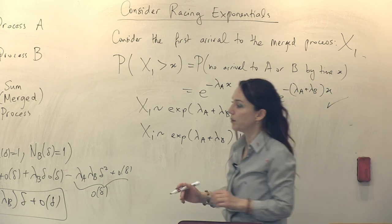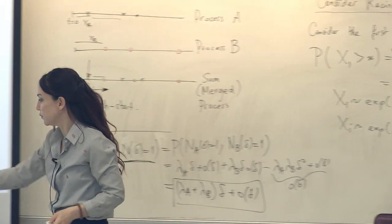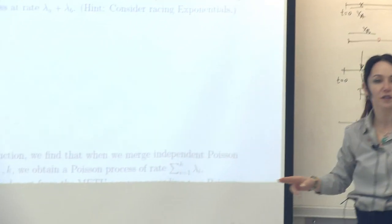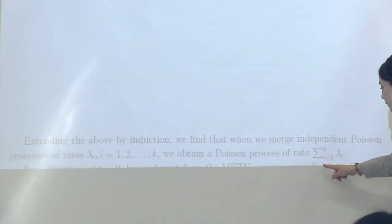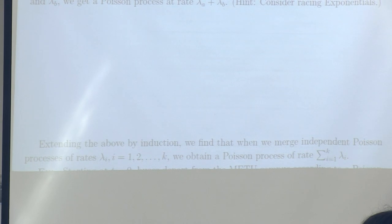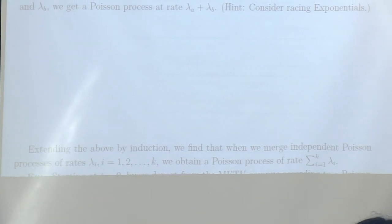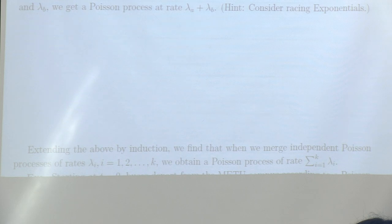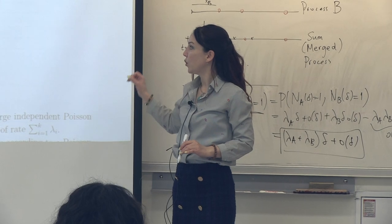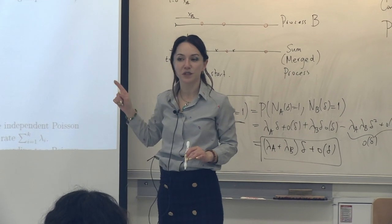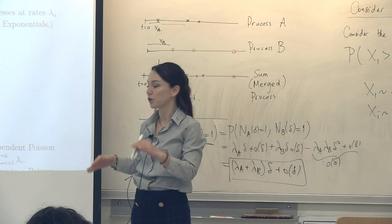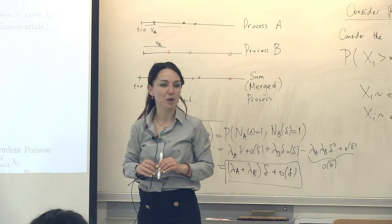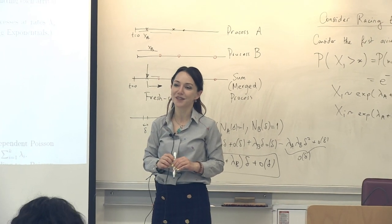Extending the above by induction, when we merge independent Poisson processes of rates λ_1 through λ_k, we obtain a Poisson process of rate equal to the sum of all those rates. In the next lecture, we will combine all of these properties to solve longer and more interesting problems about the Poisson process. Enjoy your break.